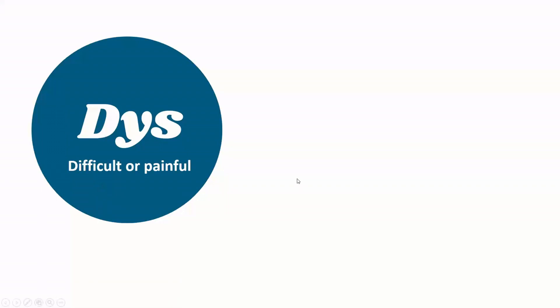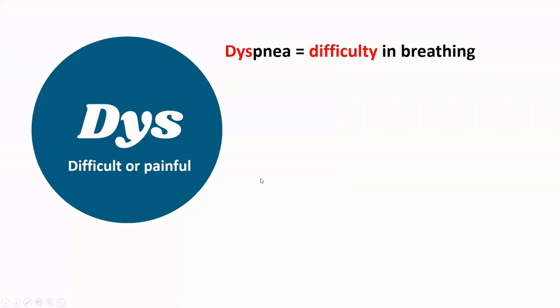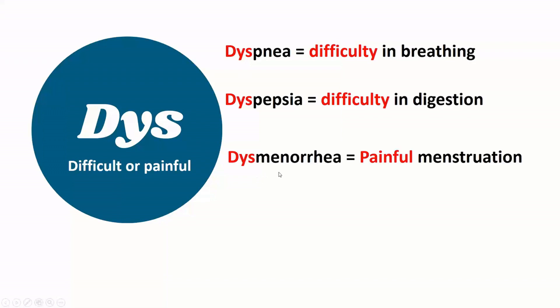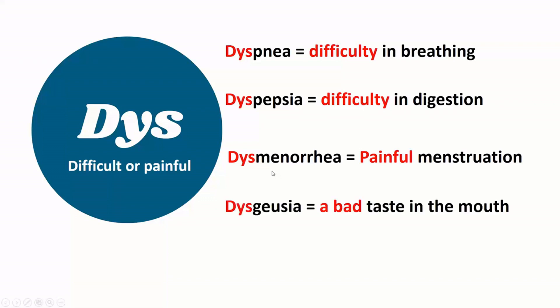The next prefix is dys, which refers to difficult or painful. Examples: dyspnea is difficulty in breathing, dyspepsia is difficulty in digestion, dysmenorrhea is painful menstruation, dysgeusia is bad taste in the mouth, dystonia is loss of muscle tone.